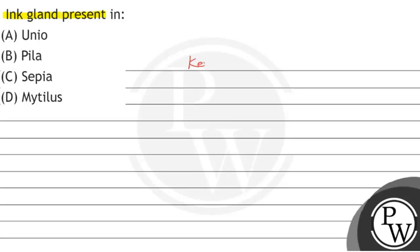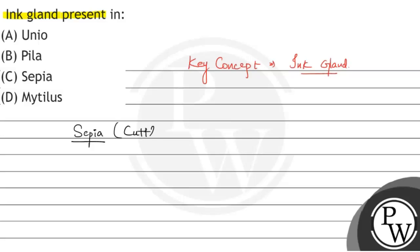The key concept we should know to solve this question is about ink gland — what it is and which organism it is present in. Ink gland is used to run away from predators or harmful organisms. Ink gland is present in Sepia, or cuttlefish.